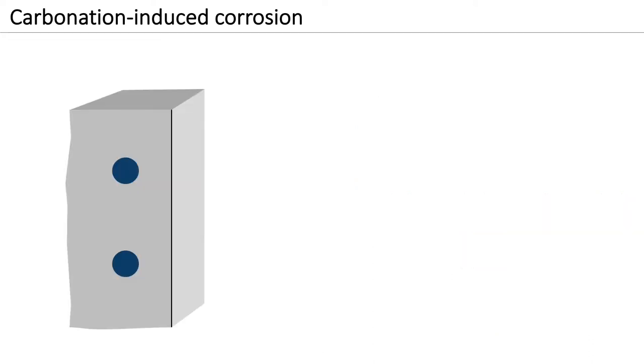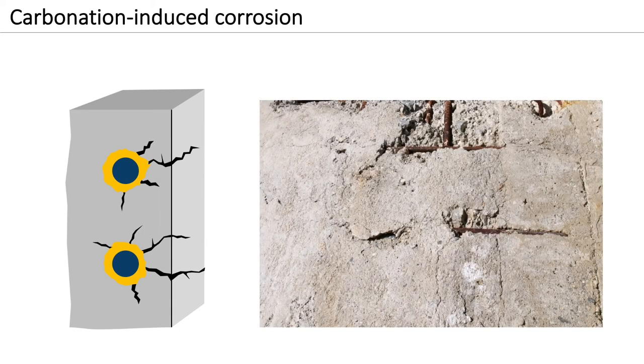Over time, corrosion products start to fill up the concrete pore system. Eventually, rust stains and concrete cracking and spalling become apparent. Therefore, this kind of corrosion can generally be detected with visual inspection.